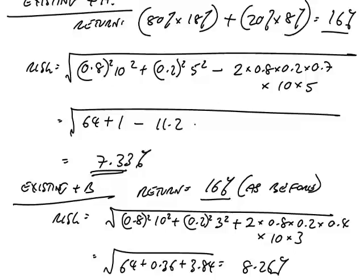The better of the two is A. If you've got the same return with less risk, it has to be preferable. A on its own is more risky, but if you were choosing investments, you don't simply say which investment is more or less risky in isolation. You always consider how it fits with your existing investments. Although A on its own is more risky, because it fits better with the existing portfolio, it ended up giving the lower risk overall.